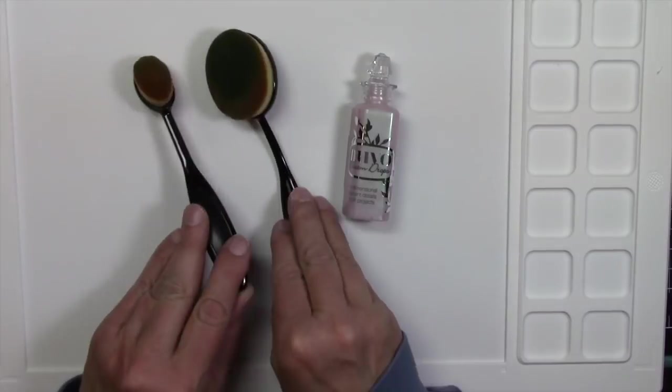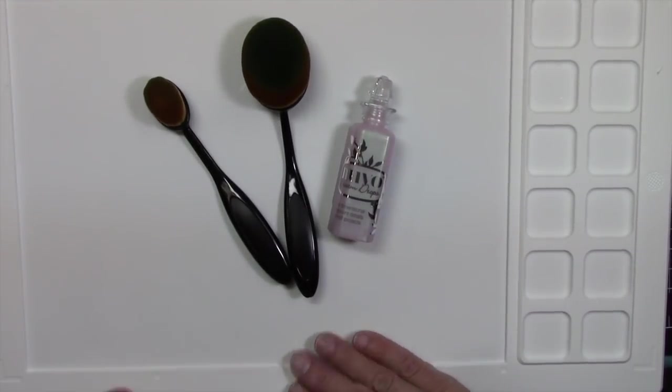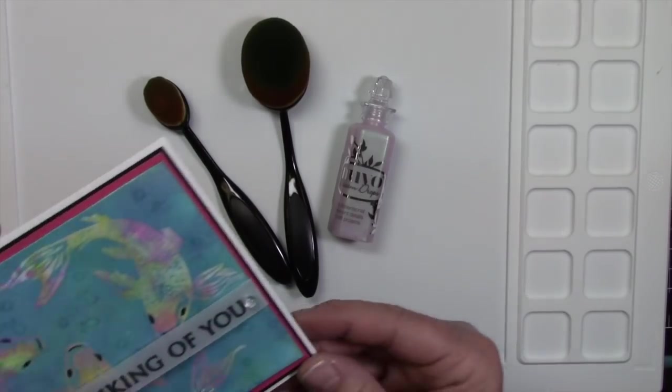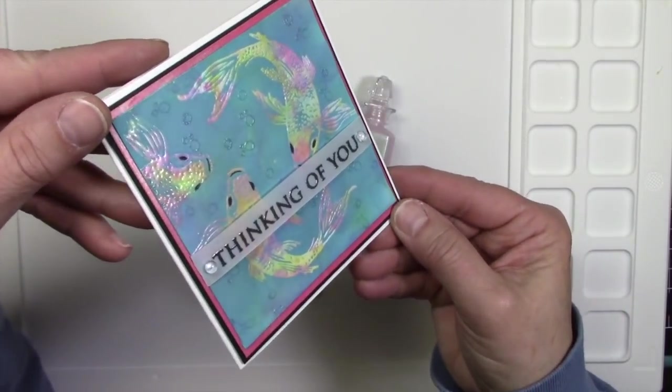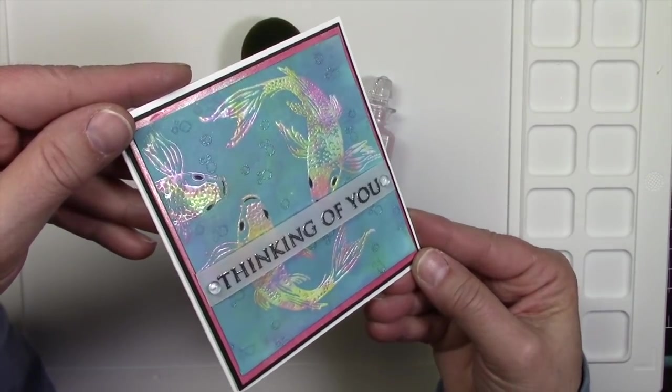I stacked this all up and placed it on a white card stock. And now I'm just going to show you the products that we went through. The Nuvo Dream Drops, the life-changing picket fence brushes, the waffle flower mat. And here's our project. I hope you like it.